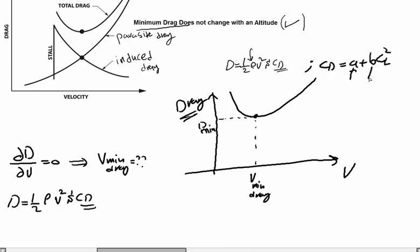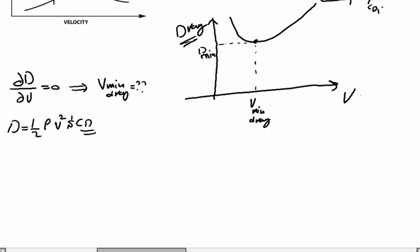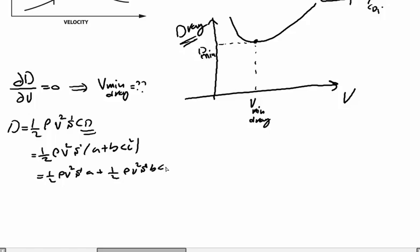This b·CL² term produces the induced drag curve, and 'a' (also written as CD0) is the parasite drag coefficient. Keeping 'a' and 'b' as constants, the drag equation becomes: D = ½ρv²S·(a + b·CL²) = ½ρv²S·a + ½ρv²S·b·CL², multiplying out the two expressions.